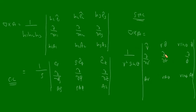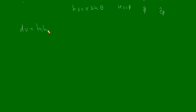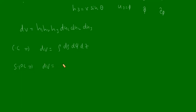Now the volume element: in general curvilinear coordinates, dv equals h1 h2 h3 du1 du2 du3. In cylindrical coordinate system this gives dv equals rho d rho d phi d z, and in spherical polar coordinate system the corresponding equation is dv equals r² sin theta dr d theta d phi.